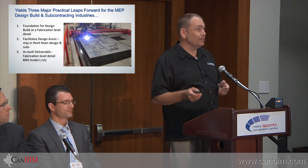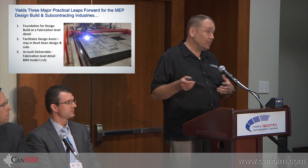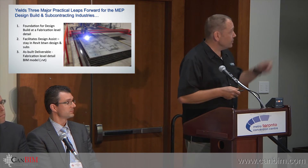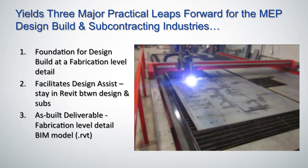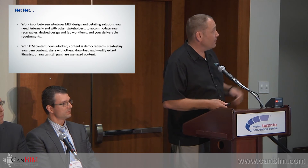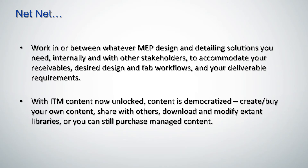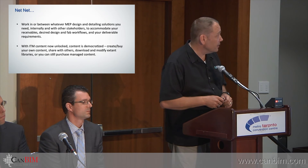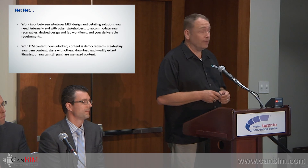Why owners want this fabrication-level detail Revit file, I'm not sure, because O&M is really going to leverage more of a Navisworks or BIM 360 type environment — but that's what they're asking for. The three major workflow steps are: design-build at fabrication level, design assist which is better, and as-built deliverable which is best. The net-net is you can work between whatever MEP and detailing solutions you need — start in Revit or CADMEP and work all the way through. We want to give everybody the ability to work in whatever software they want and go back and forth as needed. With ITM content now unlocked, the content is democratized — anybody can use it, change it, and do whatever they need with it.